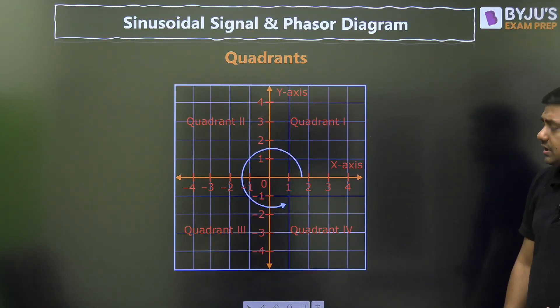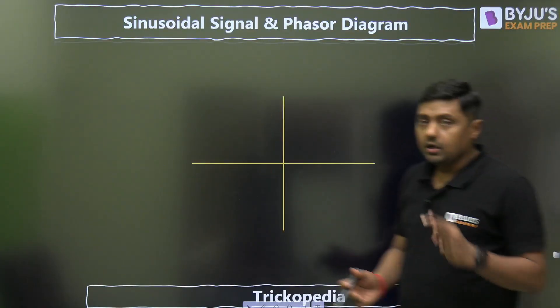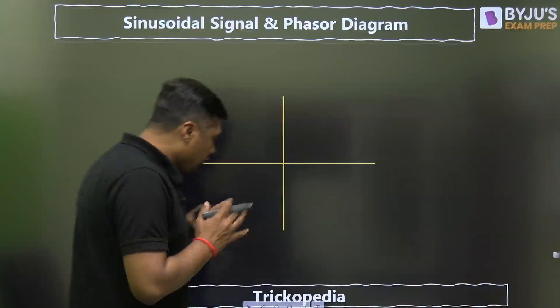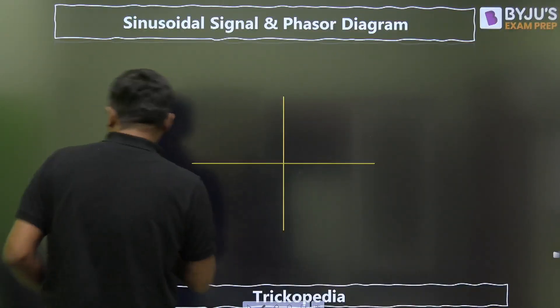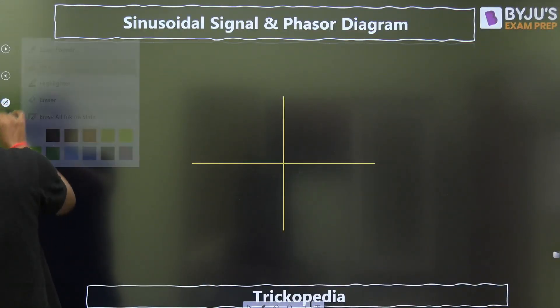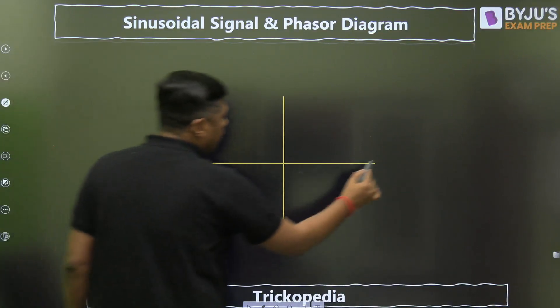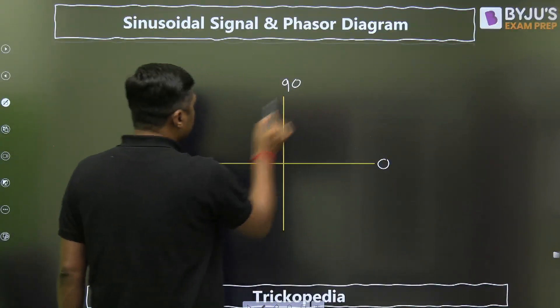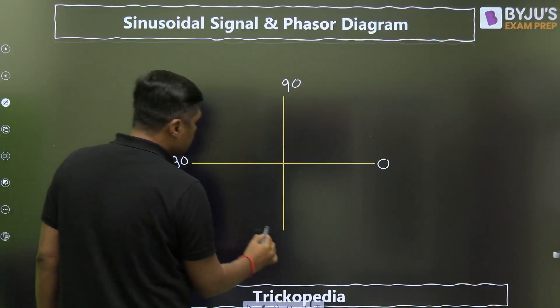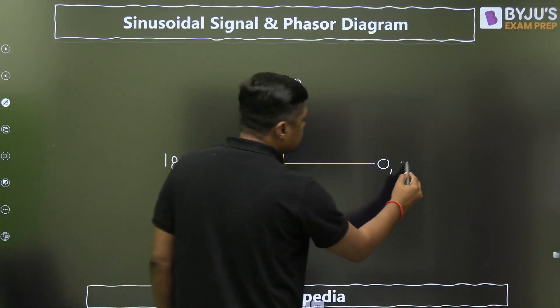Then about the sinusoidal signal. How we can relate it? First of all, when we are moving in anti-clockwise direction, always remember the angle, we have to take positive angle. So this is 0 degrees, this is 90, this is 180, this is 270, and this has become 360 degrees if we are moving in anti-clockwise direction.